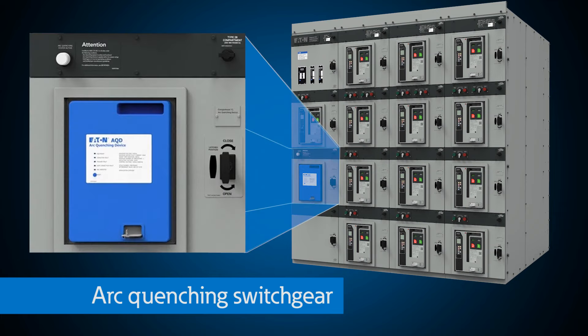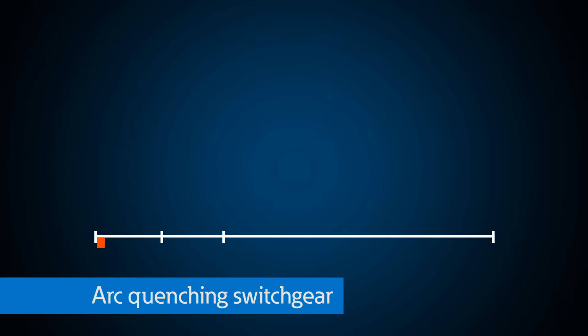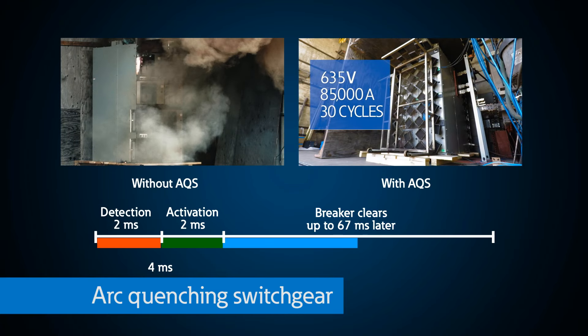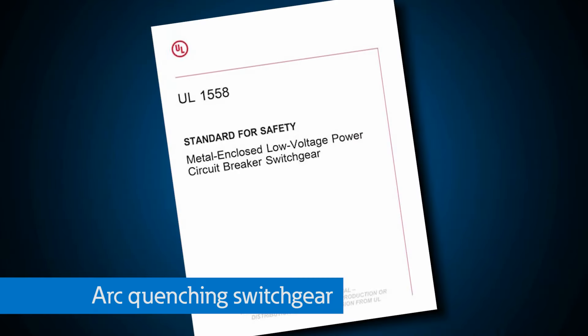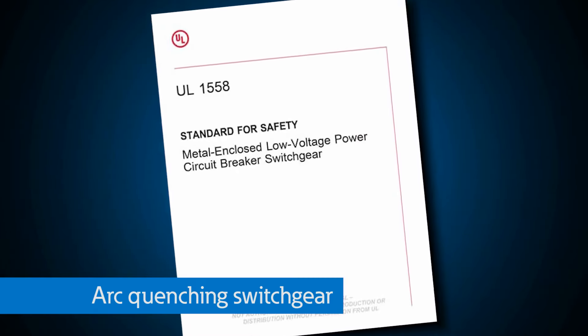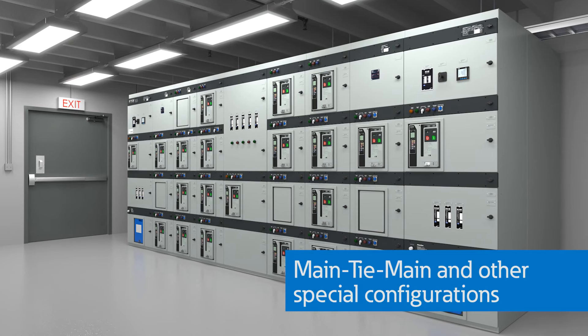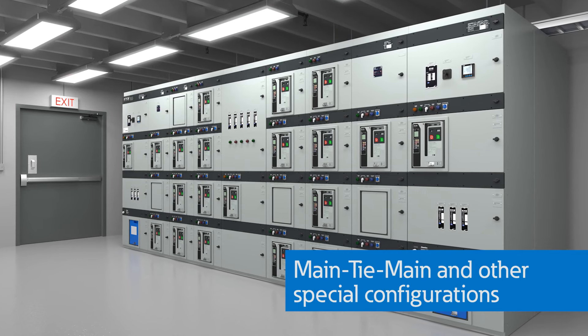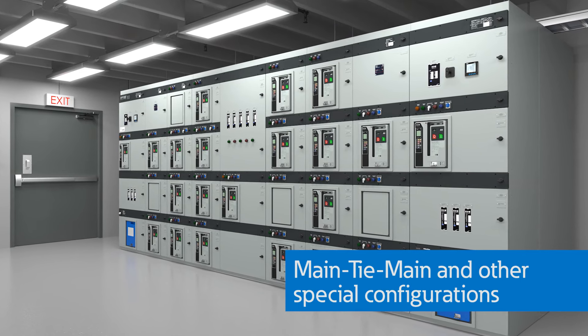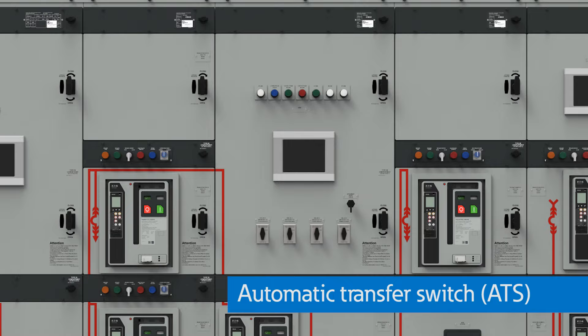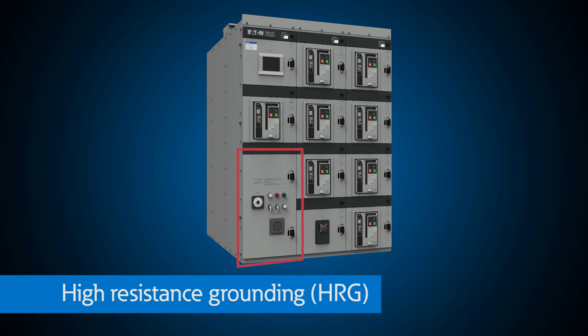Arc quenching switchgear reduces incident energy to a level where the switchgear will survive an electrical arc flash event while providing enhanced safety and minimal equipment downtime. Arc quenching switchgear meets and exceeds arc resistant testing requirements even when breakers are removed, doors are open, covers are removed, and without the need for ducts, plenums, or special enclosure construction. Other special configurations include main-tie main and other interlocks designed specifically for an application, which may include automatic transfer switches, high resistance grounding, and other special designs.